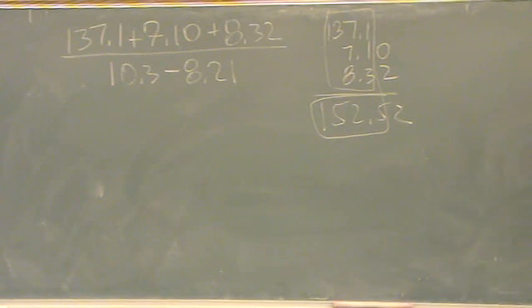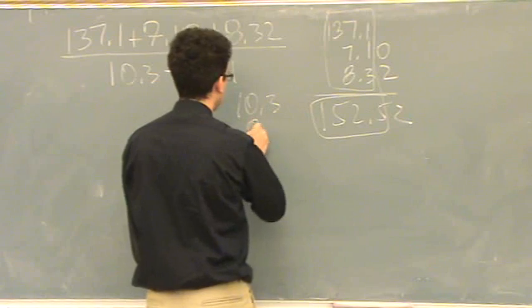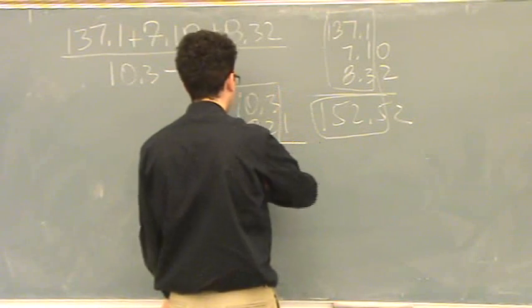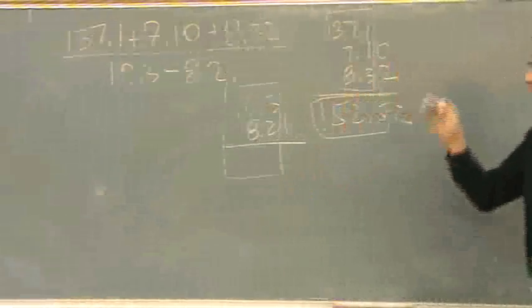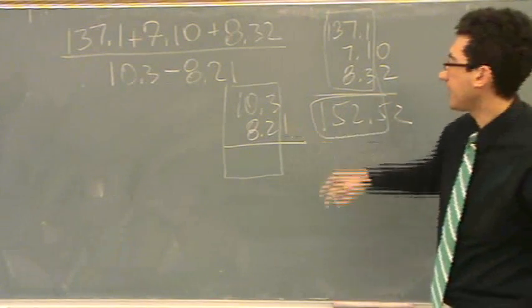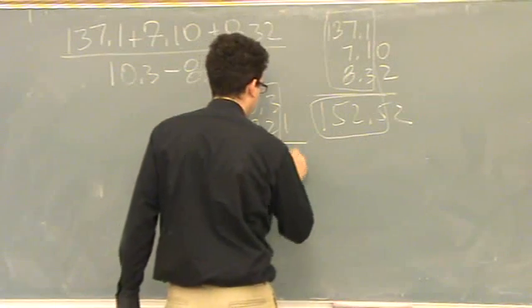because I lined up the decimals. The denominator, 10.3 minus 8.21. So now, I'm lining up the decimals and looking for the least after the decimal point, so that's the 10th place. This one can't count in the sig figs because of that. This turns out to be 2.09.